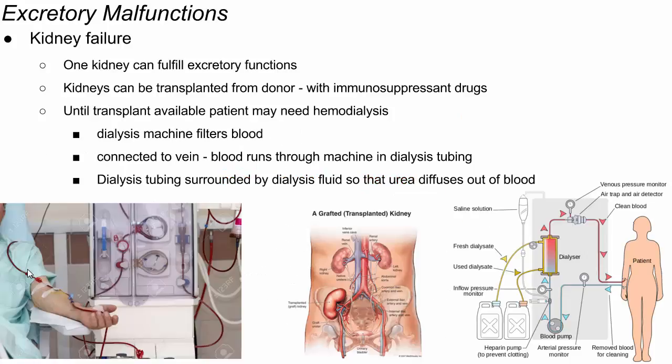When the kidneys do fail, one kidney can basically fulfill all the excretory function for a person. You can live completely normally with only a single working kidney. So if some trauma only affected one of your kidneys, you could be fine with the other kidney functioning. But if both kidneys are not functioning, that's a problem — a person can't survive because those waste products build up and eventually poison them.